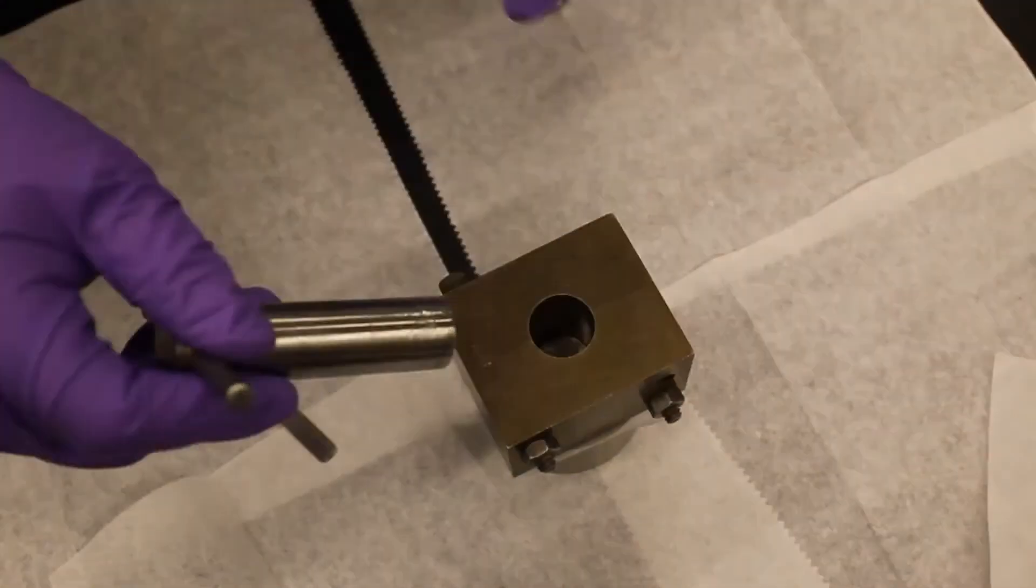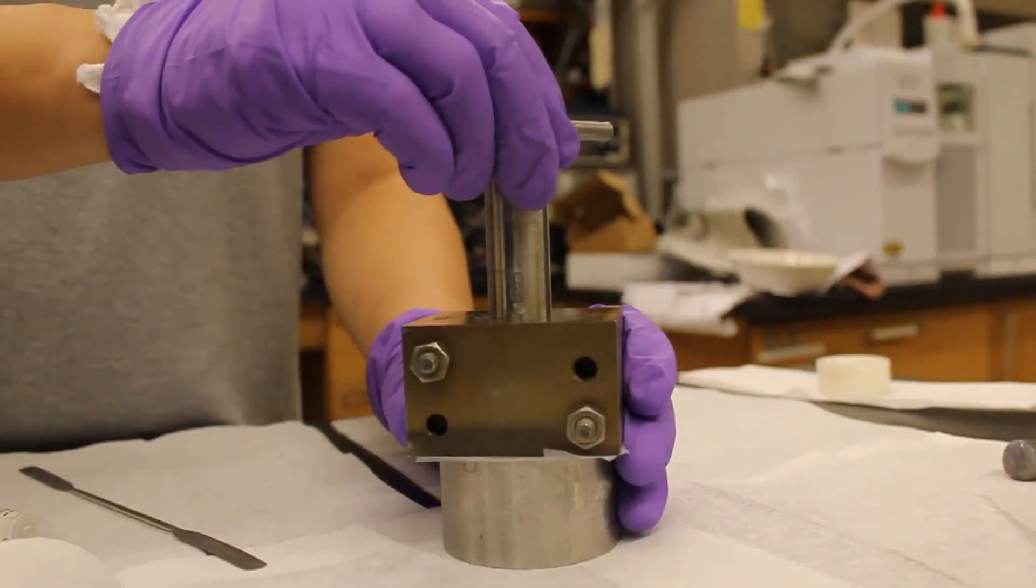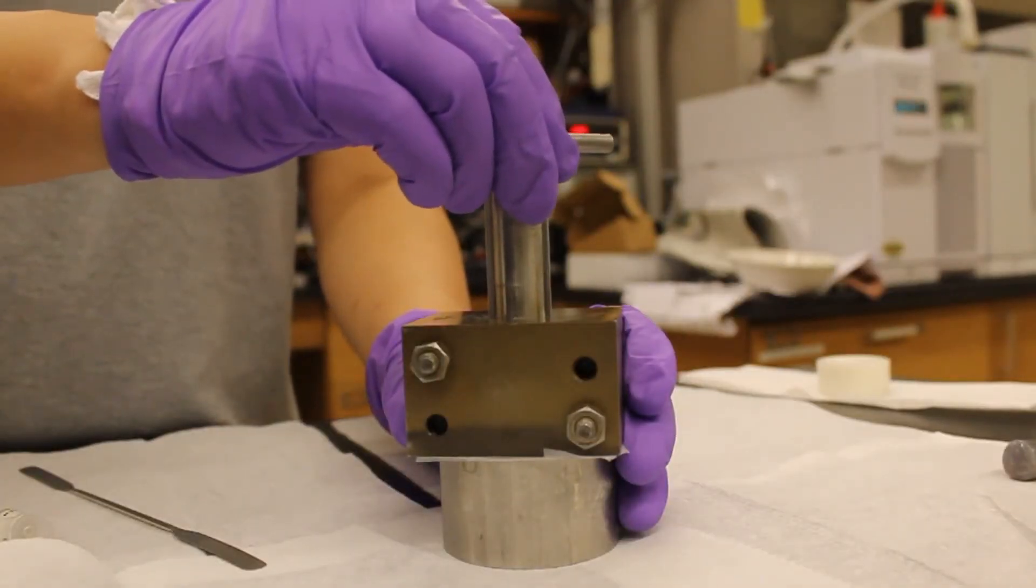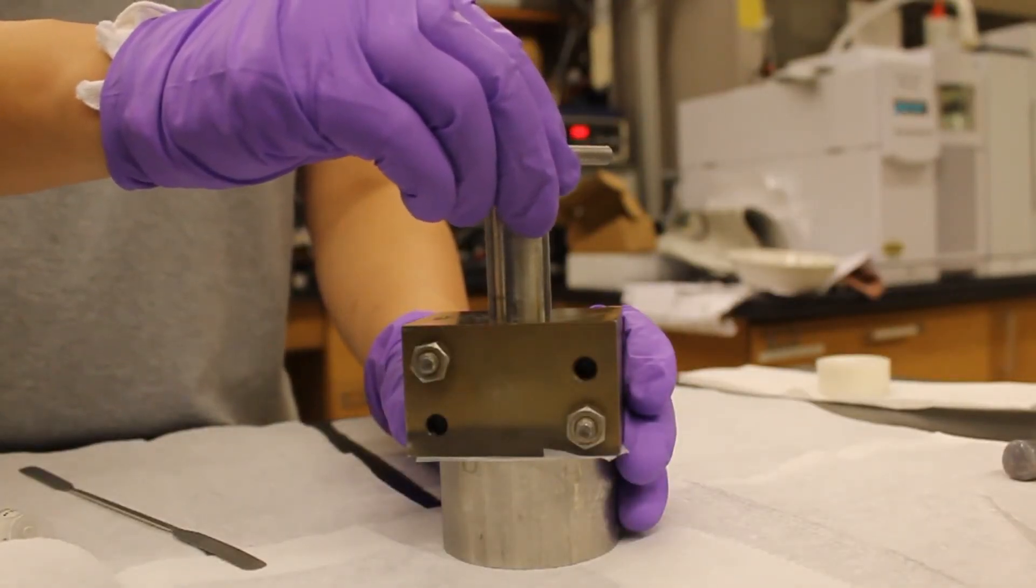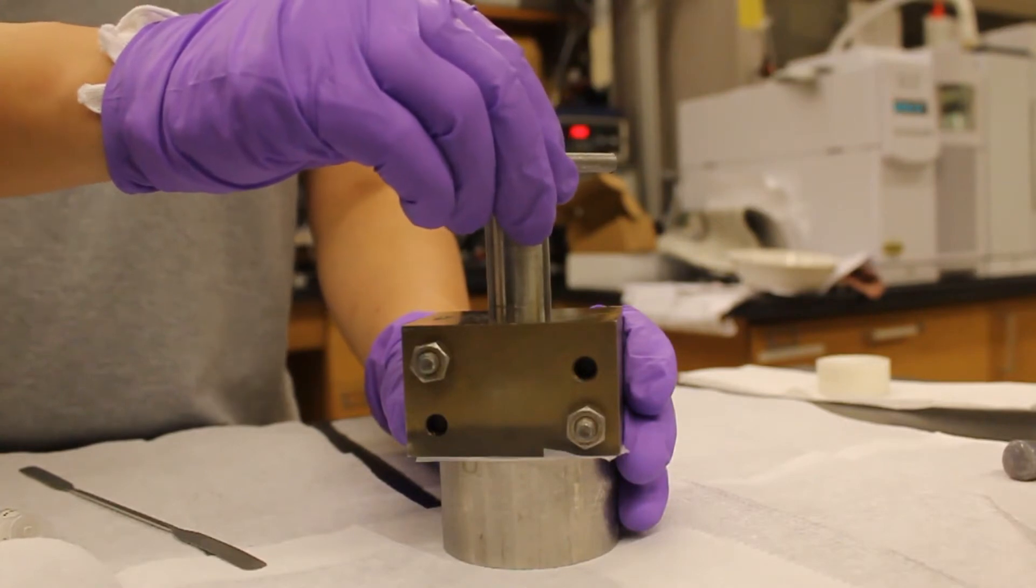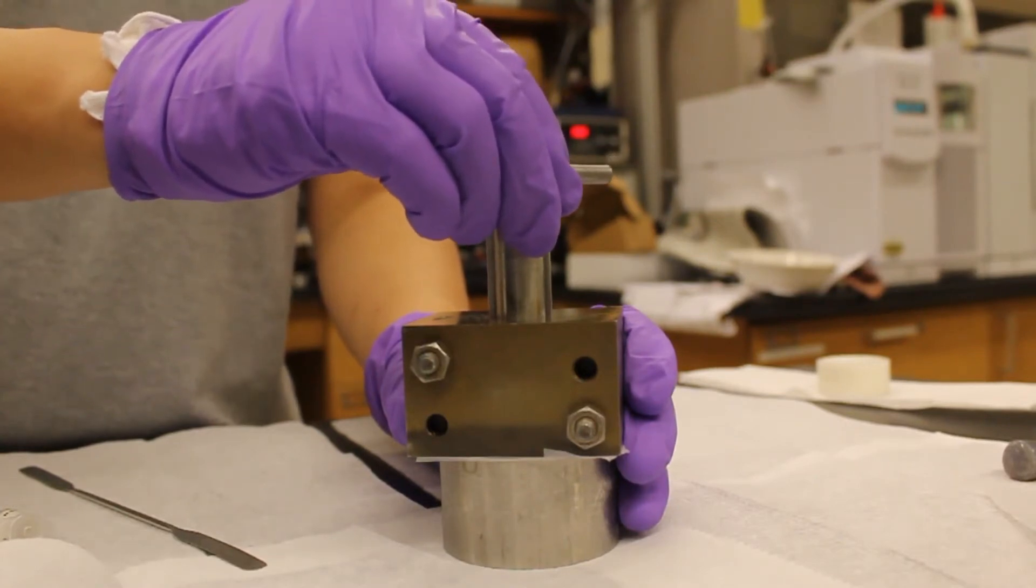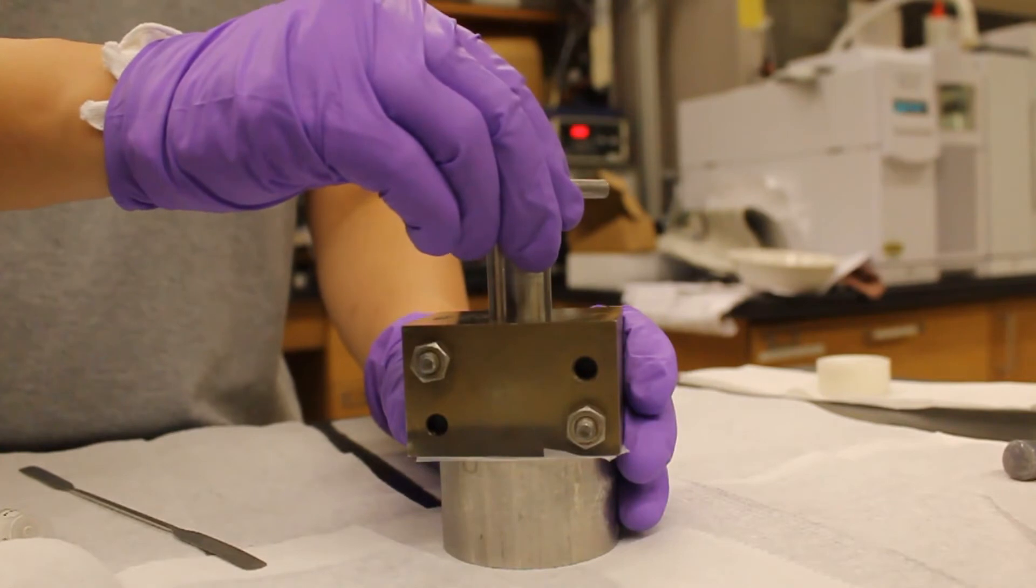Insert the plunger slowly and carefully into the die until it rests on top of the mecha. The plunger is a pretty tight fit. If you move it too fast, the air rushed out will blow the sample powder around.